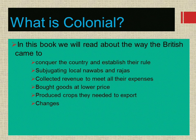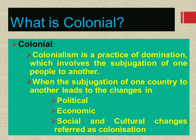In this book we will read about the way the British came to India — for the purpose of conquering the country and establishing their rule, subjugating local Nawabs and Rajas, collecting revenue to meet their expenses, buying goods at lower prices, and producing crops they needed to export. Colonialism is a practice of domination which involves the subjugation of one people to another. When subjugation of one country by another leads to political, economic, social and cultural changes, it is referred to as colonization.